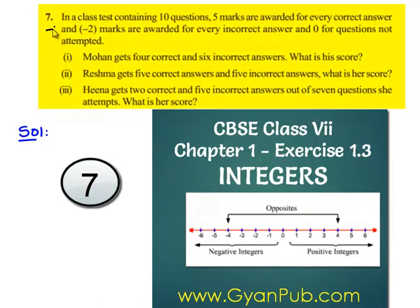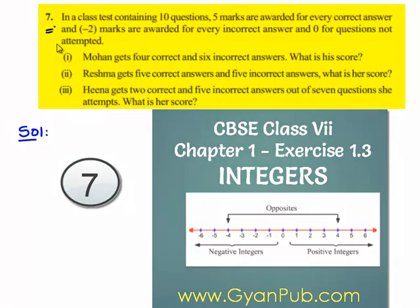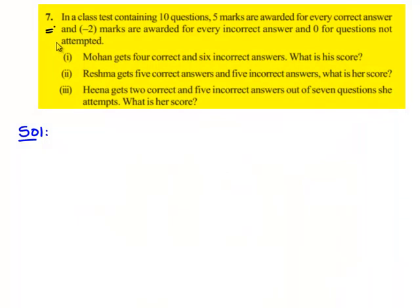We'll see the seventh question. In a class test containing 10 questions, 5 marks are awarded for every correct answer, minus 2 marks are awarded for every incorrect answer, and 0 marks are awarded for questions not attempted.